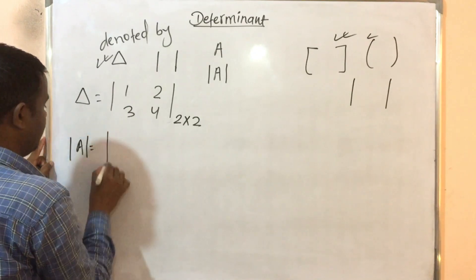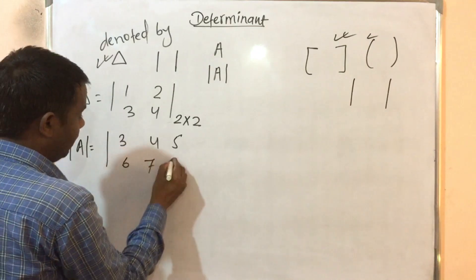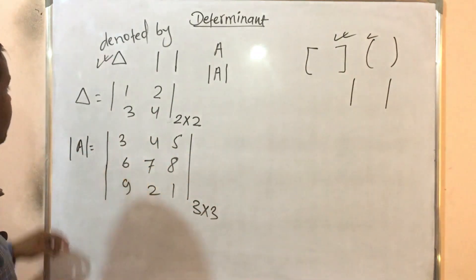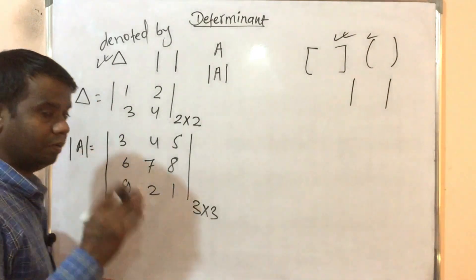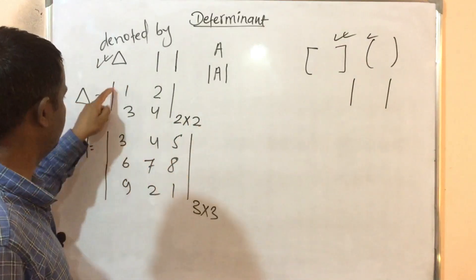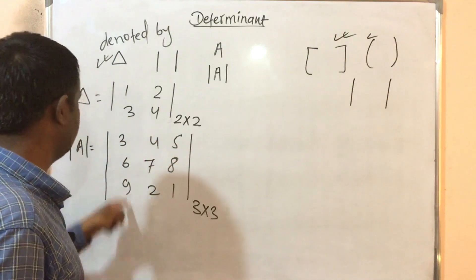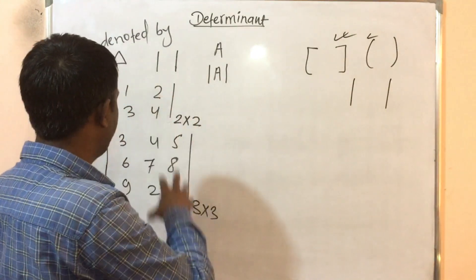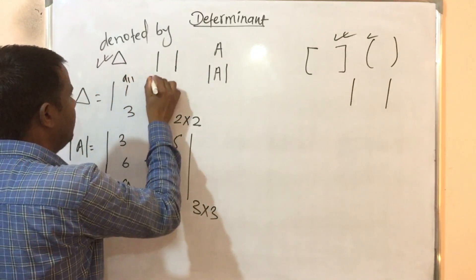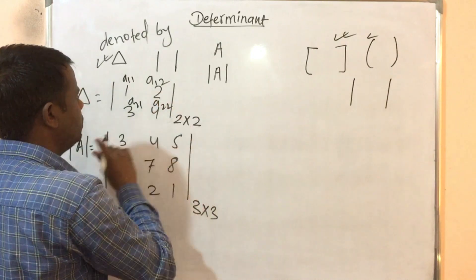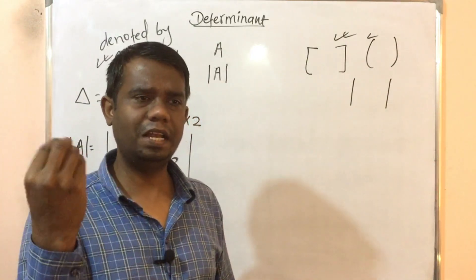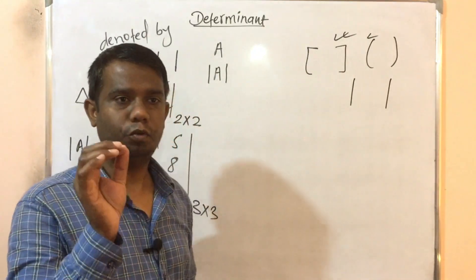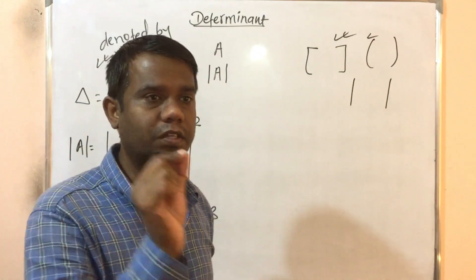How do we find the determinant of a three by three matrix? For a three by three determinant, we have three rows and three columns. In a matrix, positions are denoted as a(1,1), a(1,2), a(2,1), and so on. To find the determinant, we use cofactor expansion — we find the minor and cofactor of each element, which allows us to calculate the determinant for two by two or three by three matrices.